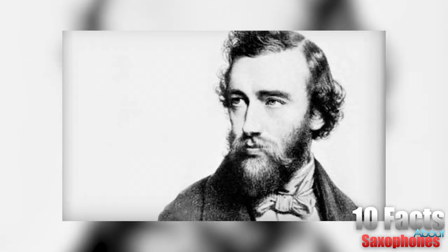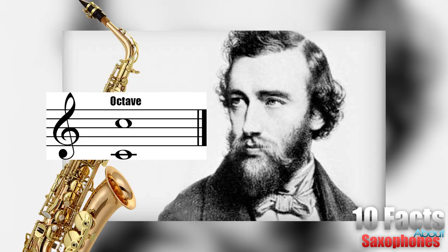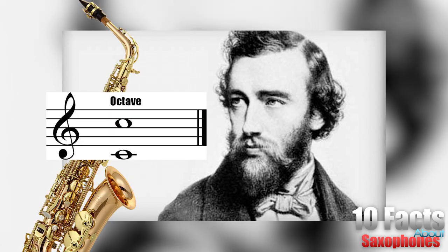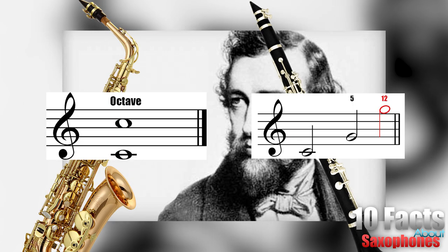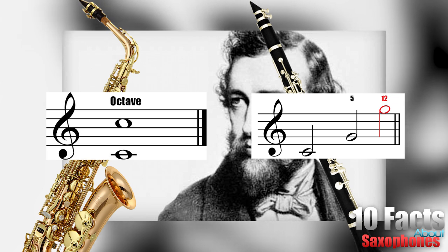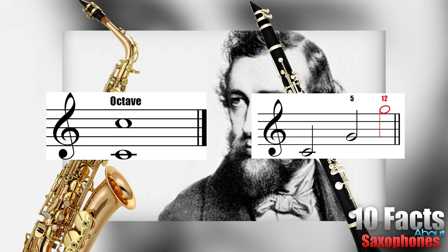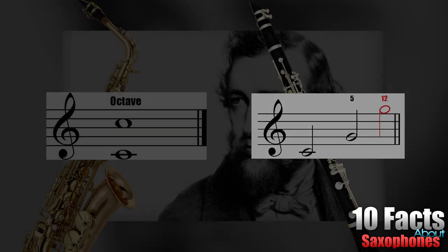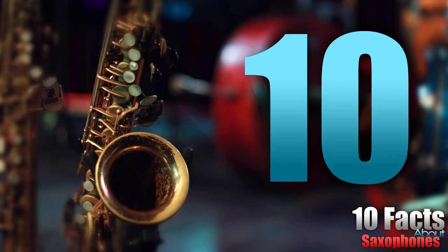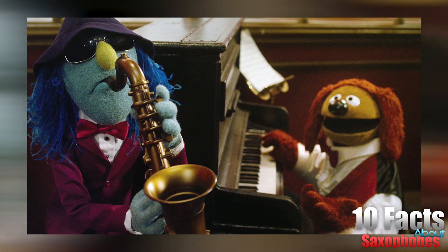Number nine: Adolf Sax looked to improve the ease of playing a woodwind instrument by having the saxophone overblow at the octave, unlike the clarinet which overblows at a 12th, or perfect fifth. This allows for identical fingering in both registers, excluding the extreme portions of the saxophone's range.